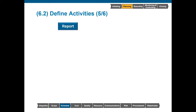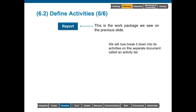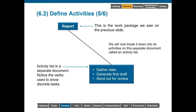So we take our report — this is a thing, a noun. Anytime we are dealing with a noun, we can be pretty sure that it is a component of the deliverable. We can then break it down into the discrete activities that must be completed to prepare this report. Very importantly, we see verbs starting to appear. With nouns, we're dealing with components of a deliverable; when we see verbs, now we are doing things — doing things to create things. So we are gathering data, generating a first draft, sending out for review. The verbs tend to be the giveaway that we're dealing with discrete activities.